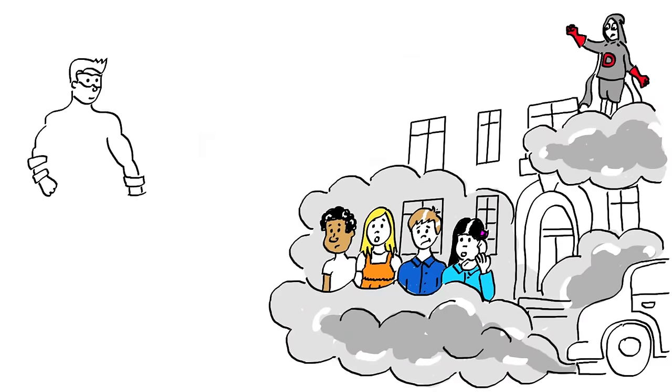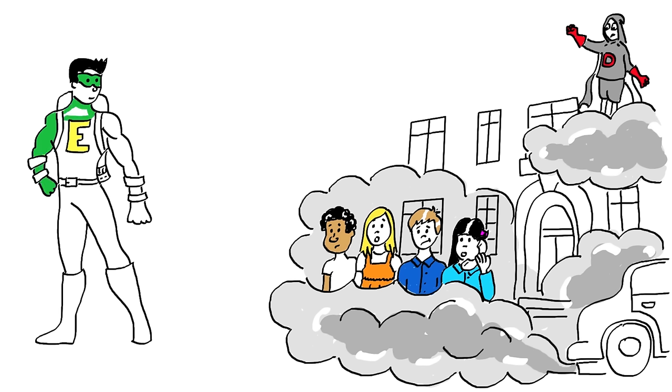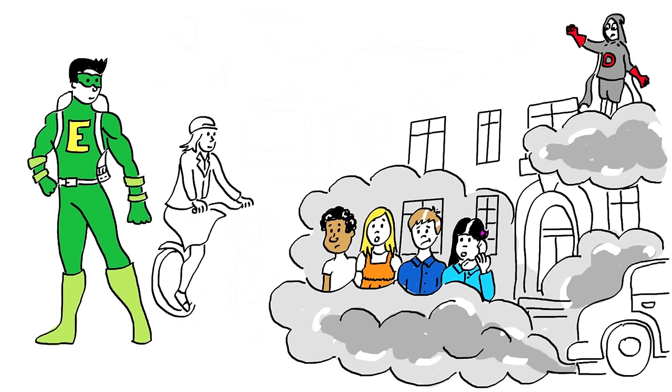Ecoman, the class shouted, why is the air so gray and smelly? Can't we do without these polluting cars? Absolutely, said Ecoman. This is already happening. Lots of people are riding bikes to work, or traveling by public transit or carpool. You can help by doing this too.